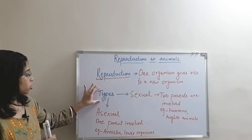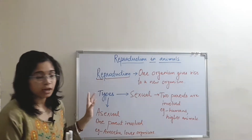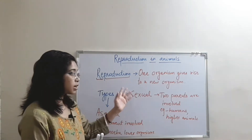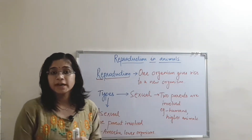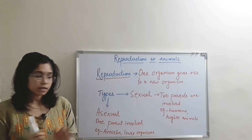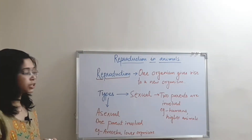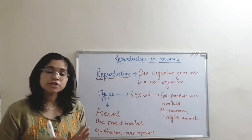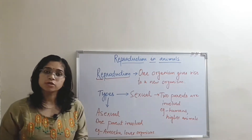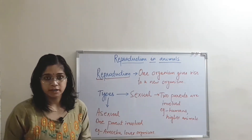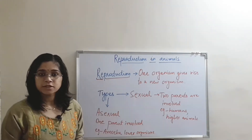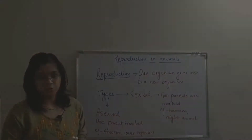The reproduction process is of two types: sexual and asexual reproduction. In sexual reproduction, as the name indicates, there are two parents involved — a male and a female. Whereas in asexual reproduction, just a single parent is enough to produce an organism. In this video, we will be talking about sexual reproduction. In the next video, we will talk about asexual reproduction.